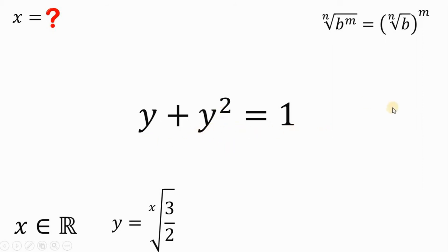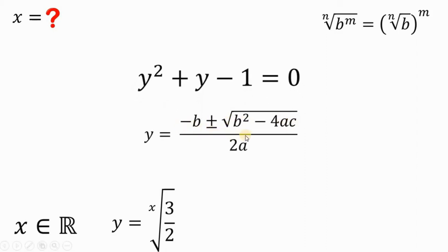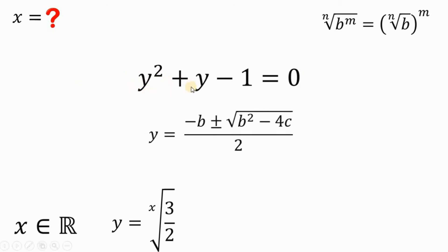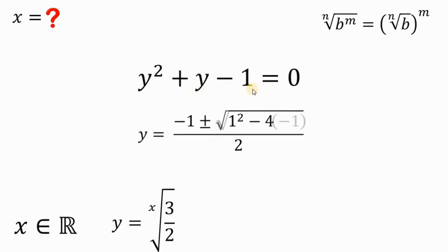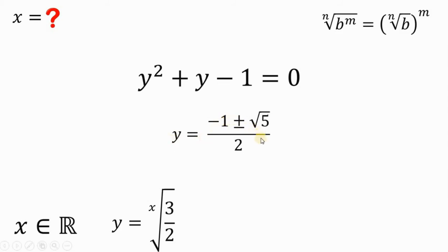Let's rearrange and equate to 0: we have y squared plus y minus 1 equals 0. Now let's solve for y using the quadratic formula: negative b plus or minus square root of b squared minus 4ac, all over 2a. The value of a is the coefficient of y squared, which is 1. The value of b is the coefficient of y, which is also 1. And c is the constant term, which is negative 1. Simplifying: negative 4 times negative 1 is positive 4, and 1 squared plus 4 is 5. Therefore, y equals negative 1 plus or minus square root of 5, over 2.